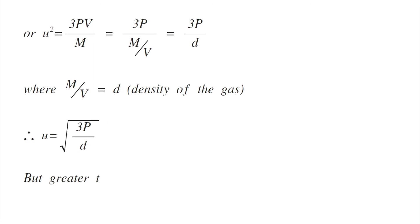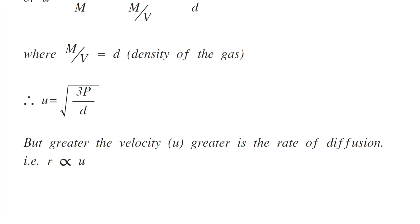But the greater the velocity u, the greater is the rate of diffusion. That is, r is proportional to the velocity u. Combining equations 1 and 2, we can say r is proportional to the square root of 3P/d.